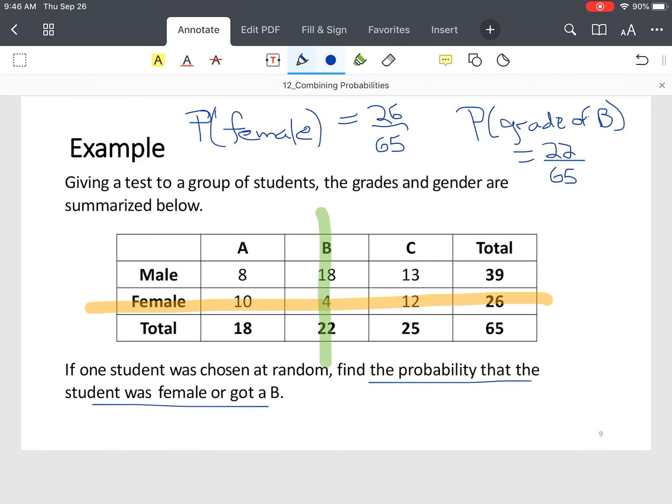And now we have to subtract the overlap, meaning both of these events happen at the same time. So we're going to subtract out. The overlap in this case is right here. Notice the highlight. You've got four students. So female students that earn Bs.